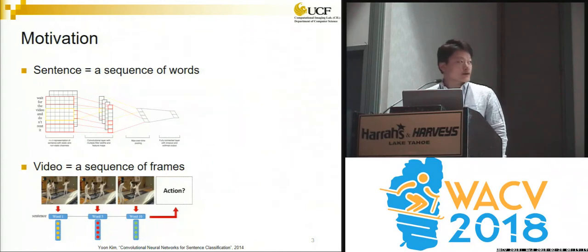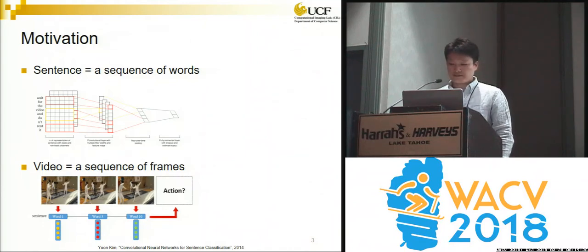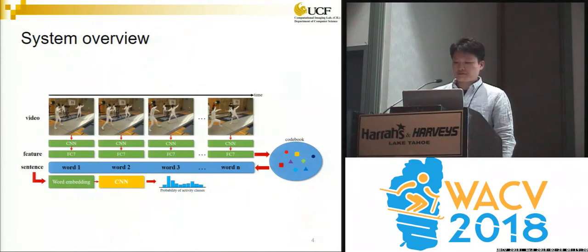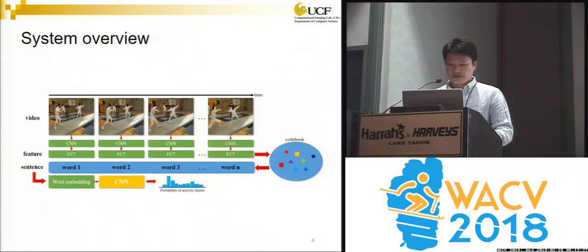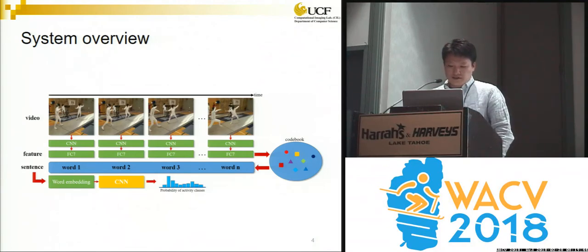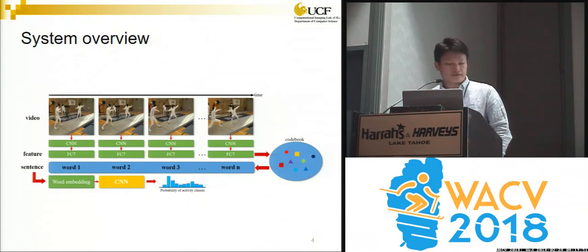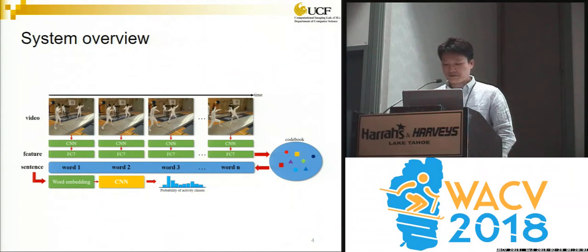Our work is motivated by the fact that a video consists of a sequence of frames, just as a sentence is a sequence of words. Here's our overall system: we first extract the vector representation for each frame using CNN, then generate a codebook using the well-known Bag-of-Words method. Next, we assign each frame to the codebook, so the sequence of frames forms a video-level representation as a 2D matrix. Finally, the sequence of vectors is fed to a simple but effective CNN to classify the videos.